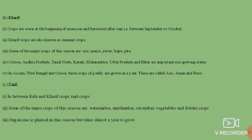In Assam, West Bengal and Orissa, three crops of paddy are grown in a year and these are called As, Amman and Boru. Zaid crops are grown in between Rabi and Kharif seasons. Some of the major crops of this season are watermelon, muskmelon, cucumber, vegetables and fodder crops. Sugarcane is planted in this season but takes almost a year to grow.